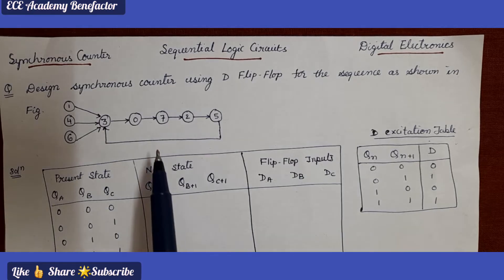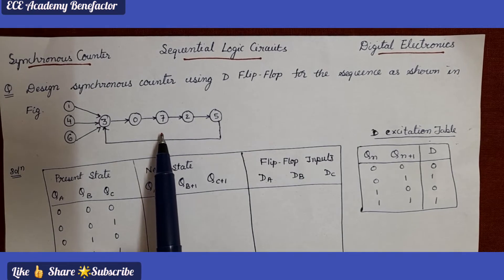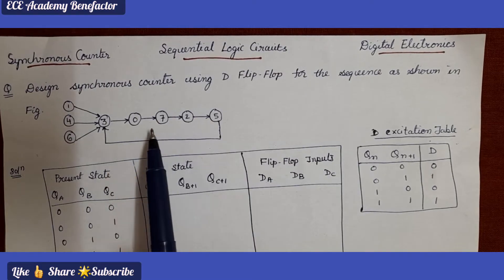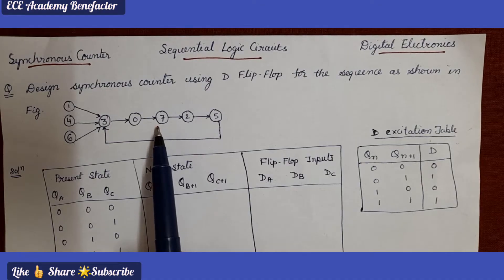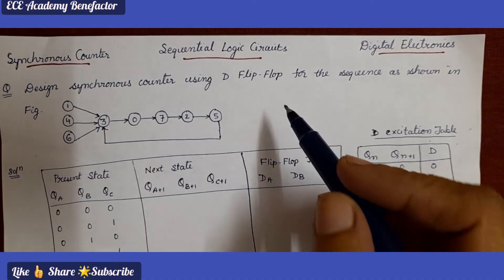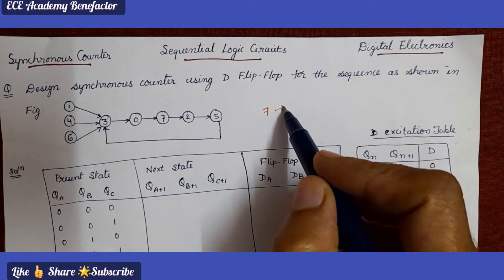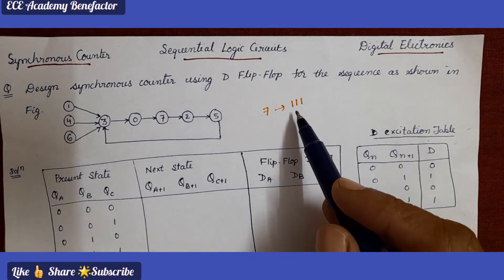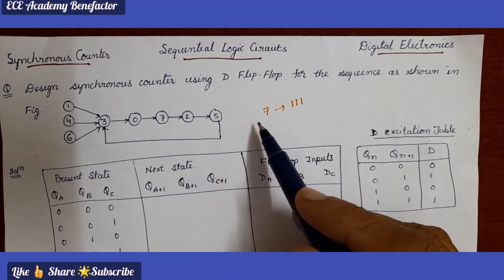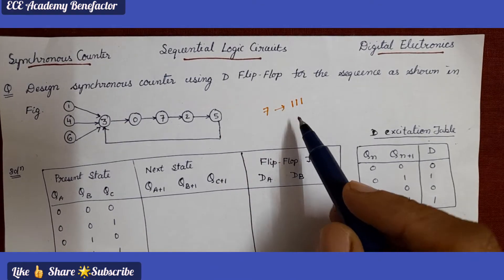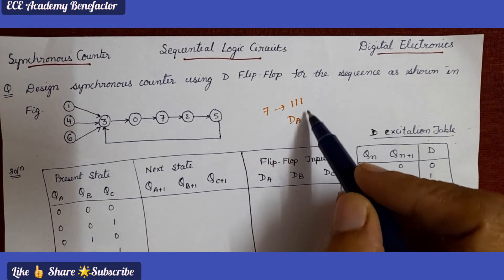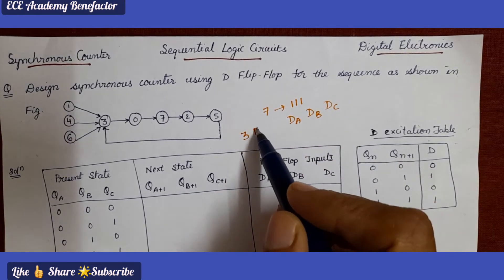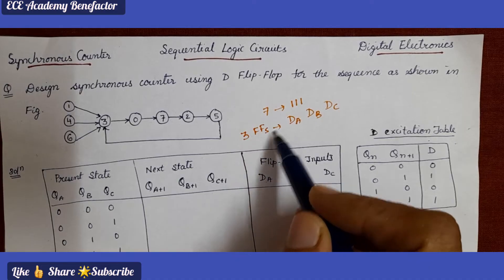Using this state diagram we need to draw a synchronous counter using D flip flop. By looking at the state diagram we need to decide how many flip flops are required. The largest number here is 7. For representing 7 we require 3 bits — triple 1. So we can design this counter using 3 flip flops: DA, DB, and DC. Three flip flops are required for this design.